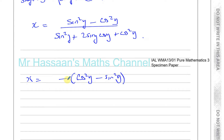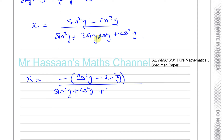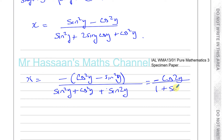The denominator is sine squared y plus cosine squared y plus 2 sine y cosine y. Now 2 sine y cosine y is the same as sine 2y from the double angle formula. And cosine squared y minus sine squared y equals cosine 2y, so the numerator is minus cosine 2y. The denominator: sine squared y plus cosine squared y is 1, plus sine 2y. So we have minus cosine 2y over 1 plus sine 2y, and that's exactly what we had to prove. So we've done it.